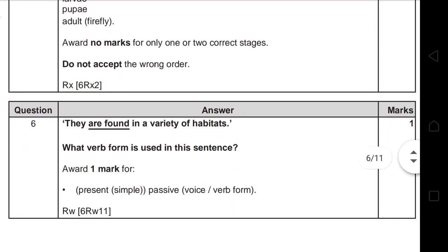Question 6: 'They are found in a variety of habitats' — what verb form is used in this sentence? The word 'form' here is used instead of 'voice,' asking whether it's active or passive. The easiest way to answer is to write everything you know about the verb. This verb is in the present simple tense and in the passive form. The most important thing is to state whether it's active or passive — here 'are found' is in the passive form.